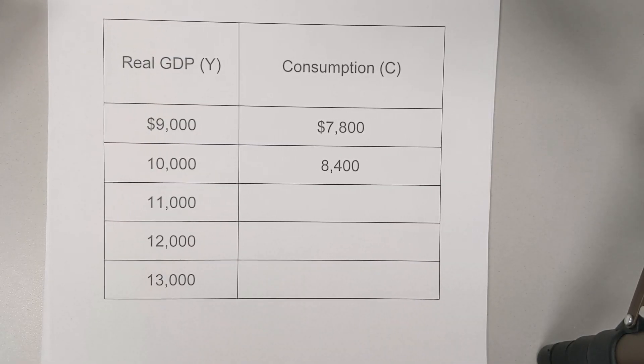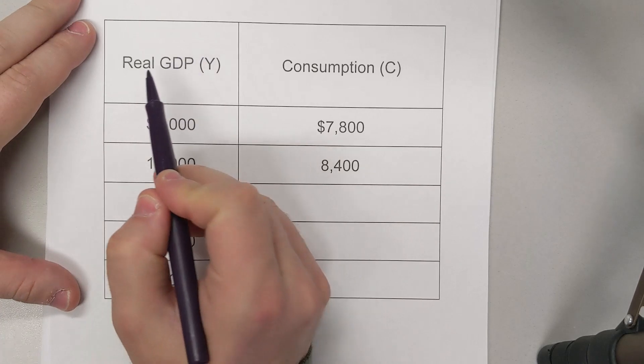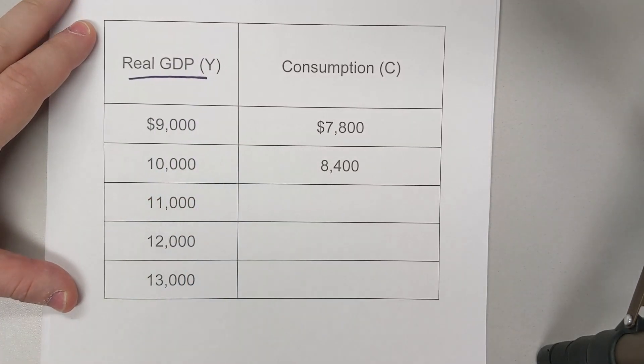Hey students, we're going to do a quick example where we're filling out a chart that has consumption values missing. We're given real GDP over here, denoted as Y, and you can see there's three blank spots for consumption.